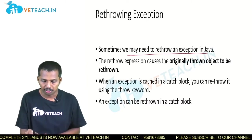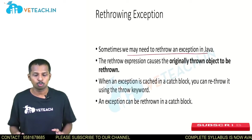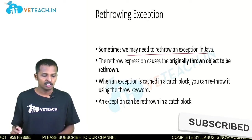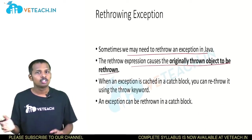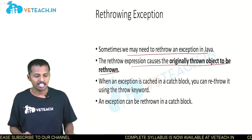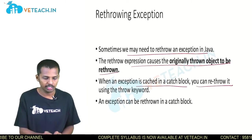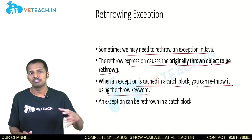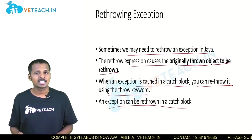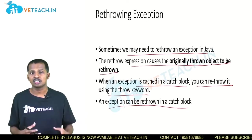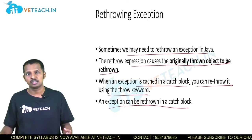Sometimes we need to re-throw an exception in Java. The re-throw expression causes the originally thrown object to be re-thrown again from the catch-block. When an exception is caught in a catch-block, you can re-throw it using the throw keyword. An exception caught in the catch-block can be re-thrown by using 'throw' followed by the exception object name.